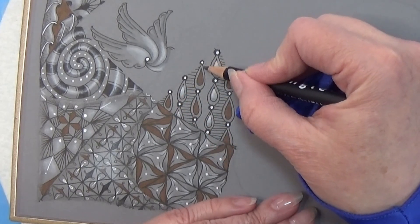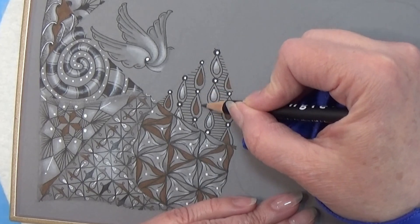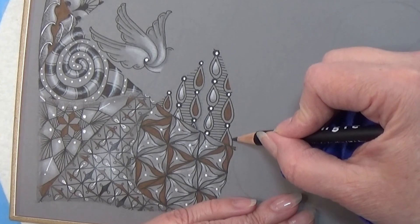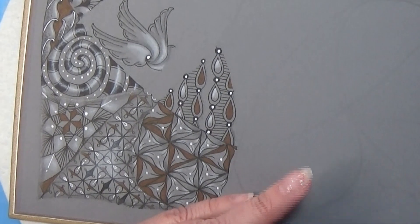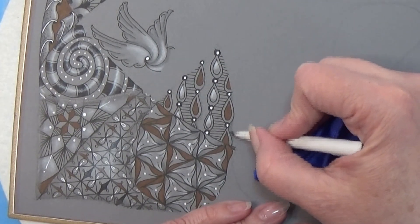I am just gonna pop in some graphite here along the pattern. I'm using my tortillon to soften that out.